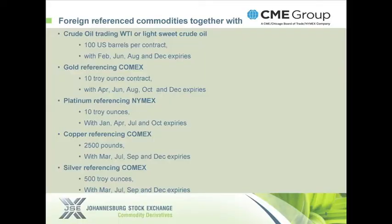Let's have a careful look at the contract size and nominal. Whatever a one RAND move represents, you multiply by the nominal to understand if you're making or losing money, or which way the market is moving when hedging. From a crude oil perspective, we trade 100 US barrels and have selected four expiry months aligned with the most liquid expiry months in the US on NYMEX — the reference exchange for WTI crude oil — being February, June, August, and December.